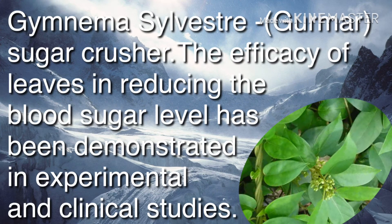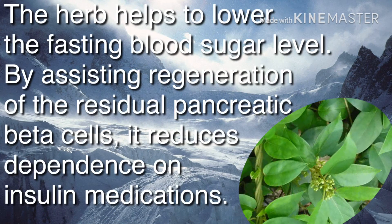Gurmar is known as the sugar crusher. The efficacy of its leaves in reducing blood sugar levels has been demonstrated in experimental and clinical studies. The herb helps lower fasting blood sugar by assisting regeneration of residual pancreatic beta cells, reducing dependence on insulin medications.